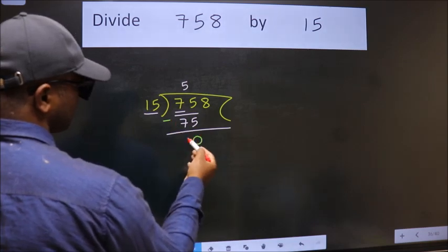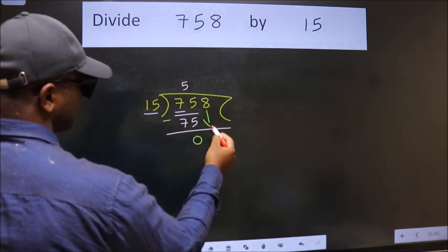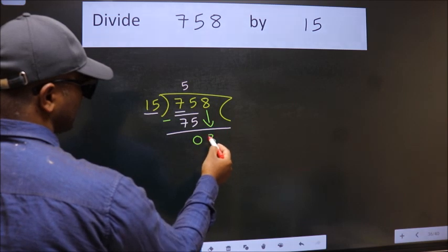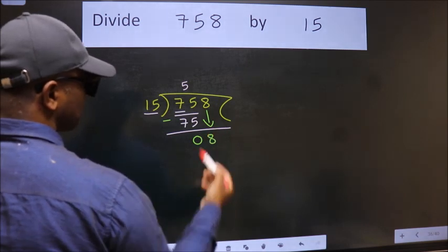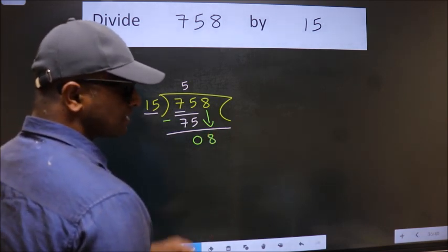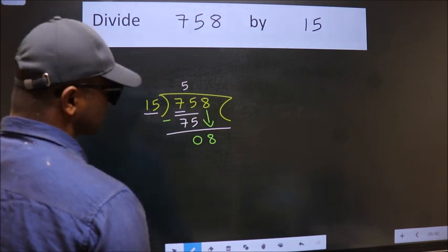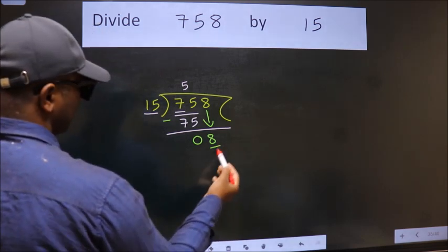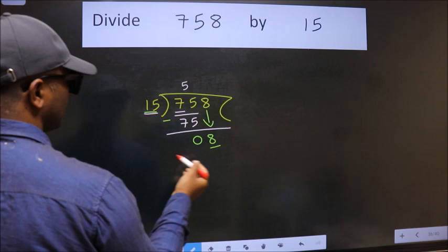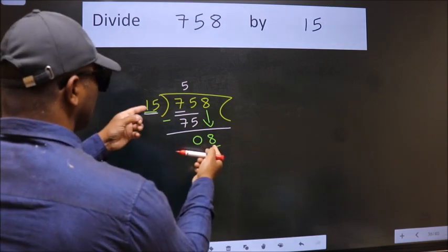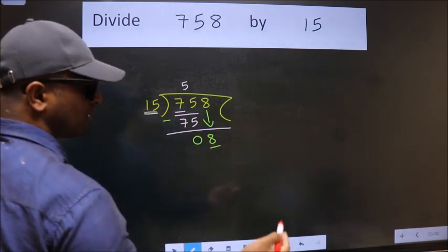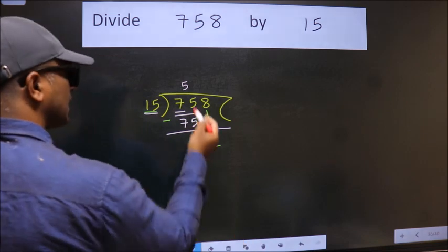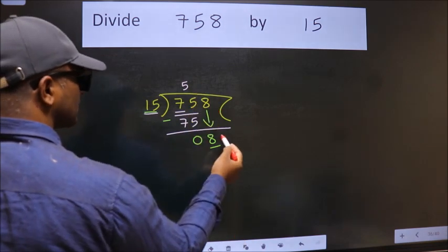After this, bring down the beside number, so 8 down. After this step, the mistake happens. Here we have 8, here 15. 8 is smaller than 15, so what many do is they directly put dot, take zero, which is wrong.